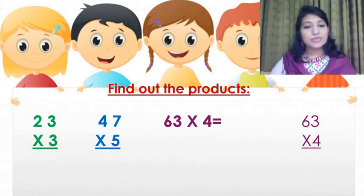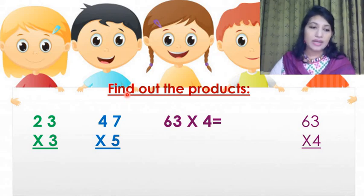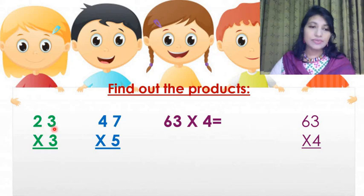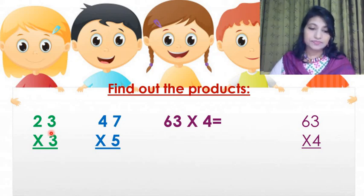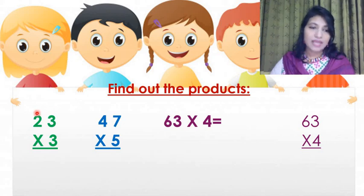Let's do some multiplication. Multiplication will be much easier for you if we memorize the basic multiplication tables. Let's try this multiplication — the first one: 23 multiplied by 3. Here 23 is the multiplicand and 3 is the multiplier, so we will find out the product. We always start with the ones place and work our way from right to left — that means always we will start from the ones place, then the tens place.